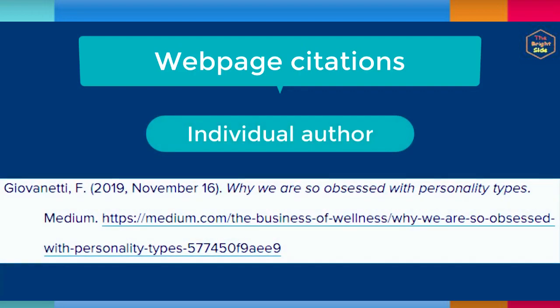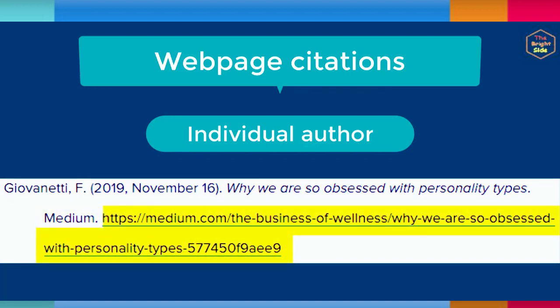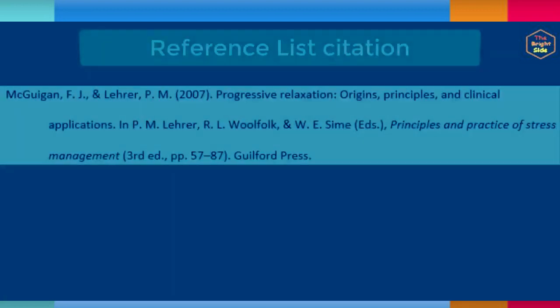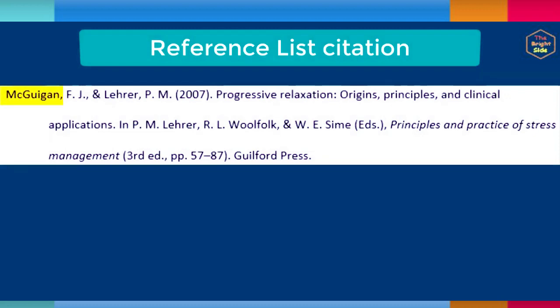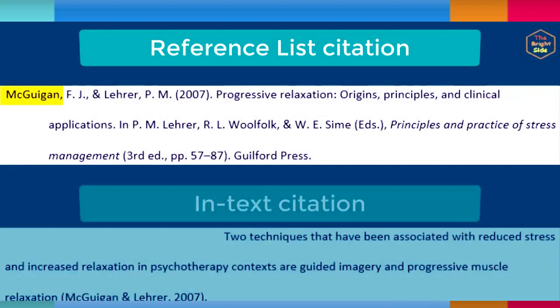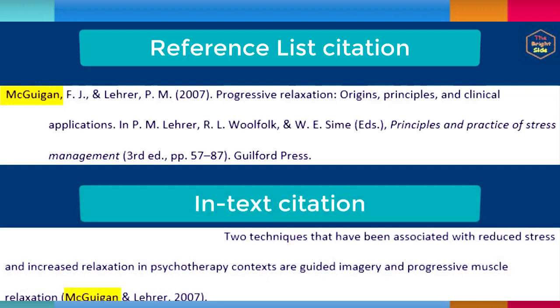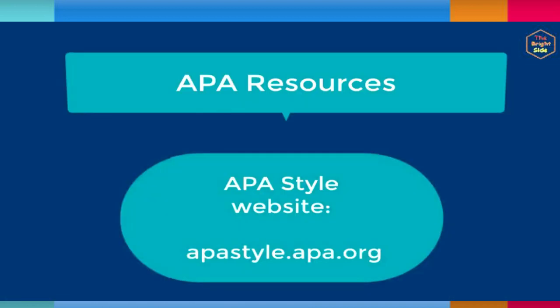Lastly, if you are citing a webpage that has an individual author, list that person as the author. Then follow the same format including the date, the italicized title of the webpage, the website name, and the hyperlinked URL. Remember that the name or phrase listed at the beginning of each reference list citation must correspond to what is listed in your in-text citations. This is the case regardless of whether the author is an individual person or an organization. For more examples of how to cite other types of resources in APA format, you might refer to the APA style website.